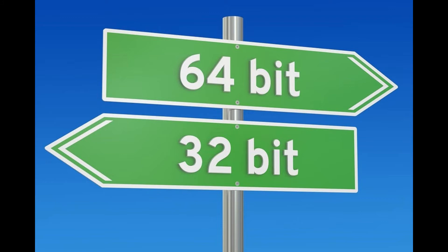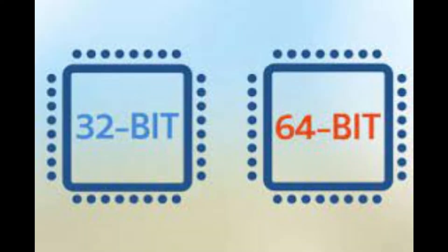हमारे कंप्यूटर के अंदर जितने भी सॉफ्टवेयर हैं, ऑपरेटिंग सिस्टम उनको उनकी बिट के हिसाब से हैंडल करता है। एक खास बात — 1990 और 2000 के दरमयान जितने भी कंप्यूटर बने, वो सारे के सारे 32-bit सिस्टम थे। 32-bit सिस्टम से मुराद यह है कि वो RAM में मौजूद मेमोरी के 2 x 32-bit को प्रोसेस कर सकते हैं।